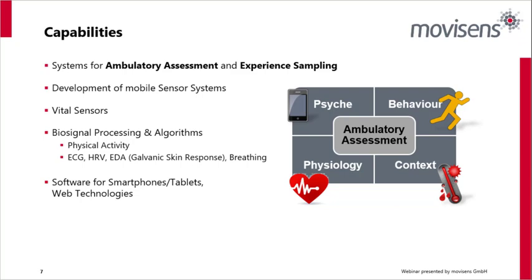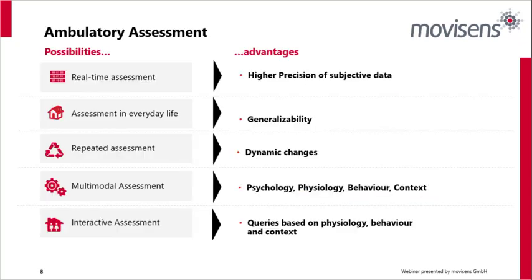We have a very broad base and focus on ambulatory assessment because real-time assessment gives higher precision — you're capturing the actual moment when it's happening, without retrospective biases. You can get outside the lab and assess people in everyday life, see changes over time, and broaden the context by capturing psychology, physiology, behavior, and context. Our favorite is the interactive assessment: using triggers based on the participant's actual activities to ask further questions and get more context data.